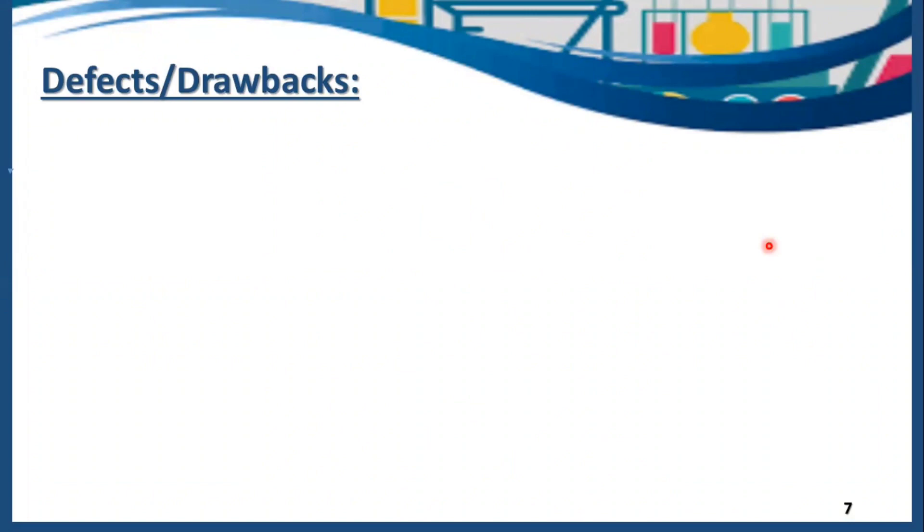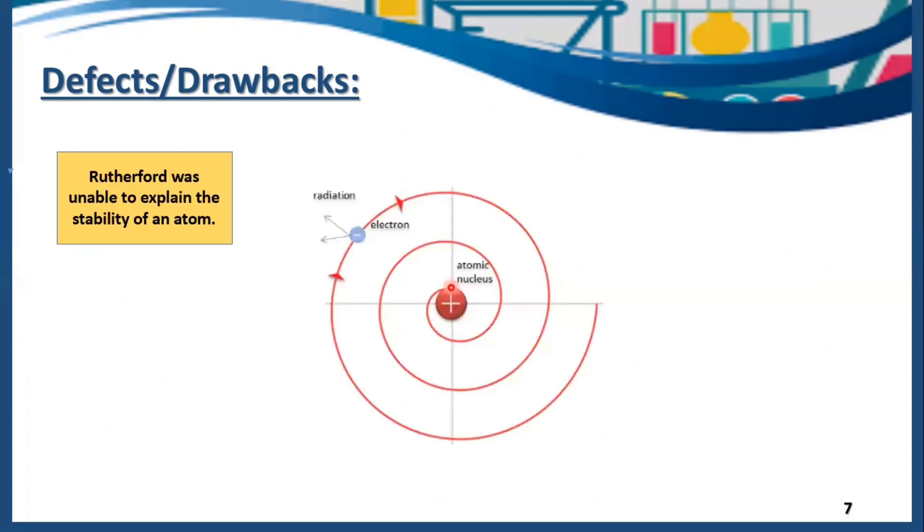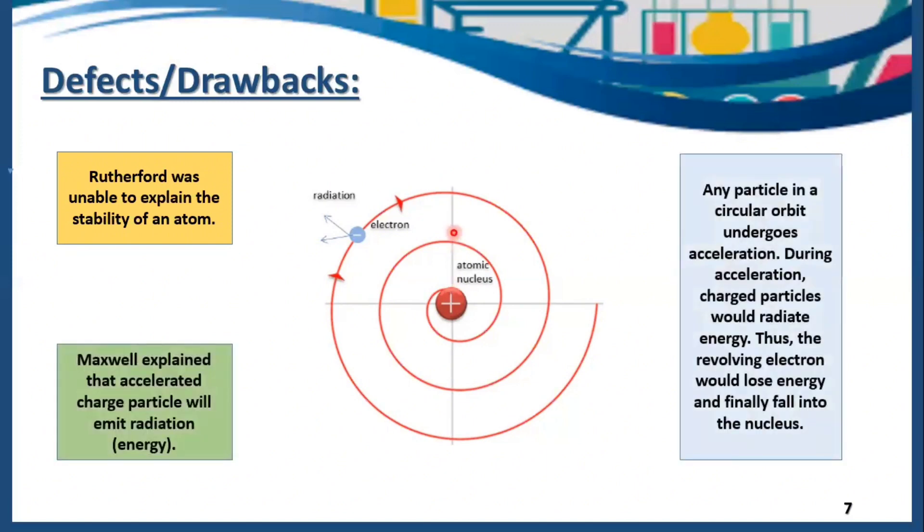No doubt Rutherford did an amazing job. He gave us an idea about the structure of the atom and charge distribution. But still there are some defects. Rutherford was unable to explain the stability of an atom. According to the postulates of Rutherford, the atom would be highly unstable. But it's not true. Atom is very stable. Rutherford said